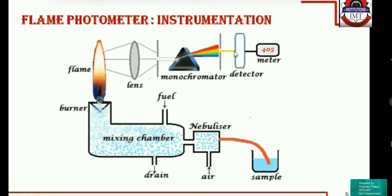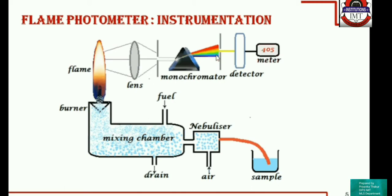Depending on the intensity of the emitted light, the detector — a photocell or photodiode — detects the intensity and generates a current proportional to the concentration. Higher the concentration, more electrons get excited and more electrons return back to the ground state by emitting their characteristic wavelength. The intensity of the emitted light will be more and the meter reading will be higher.